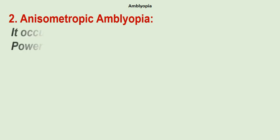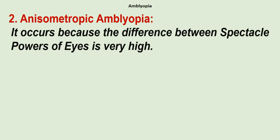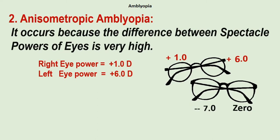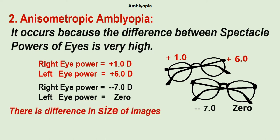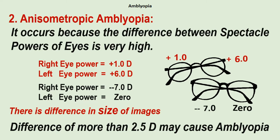Anisometropic amblyopia occurs because the difference between the spectacle powers of the eyes is very high. Because of this difference, two different-sized images are formed, one on each retina. The brain cannot fuse two different-sized images and there is a chance of diplopia or double vision. To avoid it, one eye's image is suppressed — usually the image of the eye having more power. So there is amblyopia in that eye. For example, right eye power is +1 but left eye is +6, or right eye is -7 and left eye is zero. A difference of 2.5 diopters may cause amblyopia.